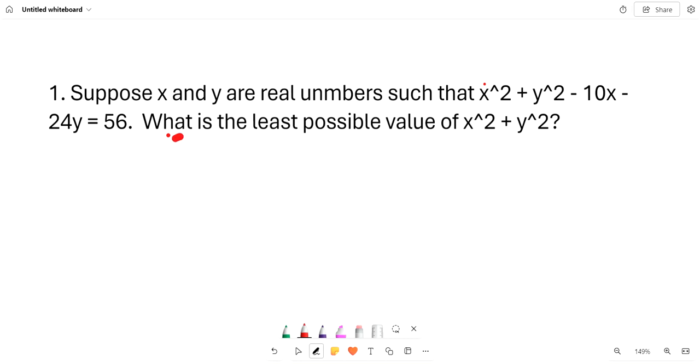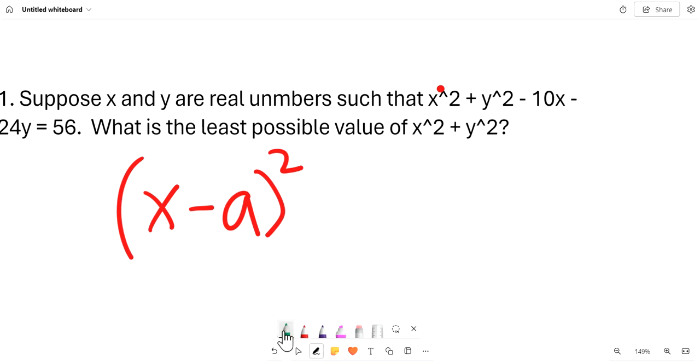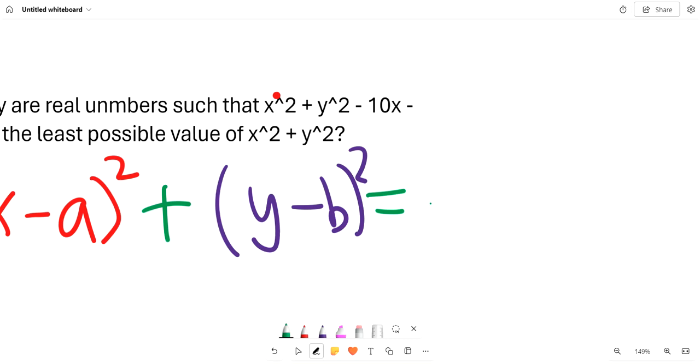So we get x² plus y². The equation of a circle is x minus a squared plus y minus b squared equals z squared.